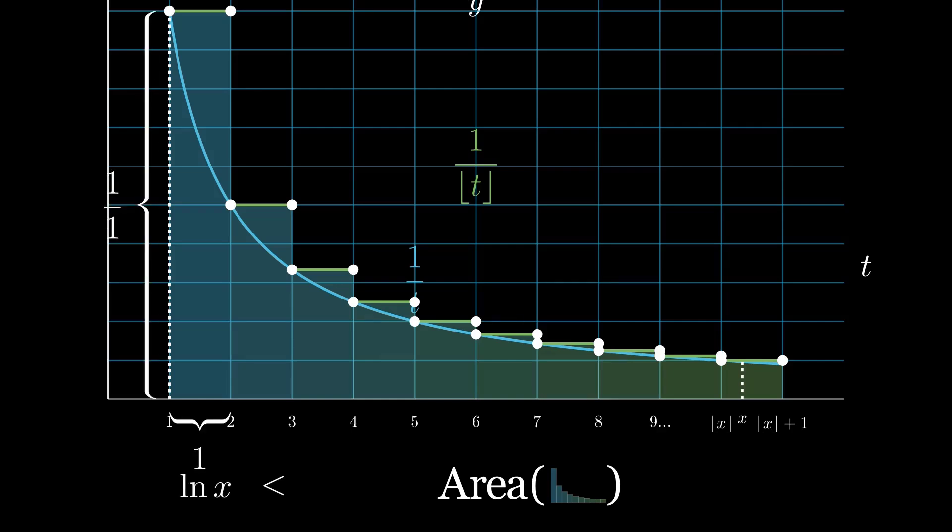For the first rectangle we have a height of 1 and a width of 1 whose area is 1. For the second we have a rectangle with height of 1 over 2 and a width of 1, and so its area is 1 over 2. We sum the areas of the next rectangles until we reach the end.